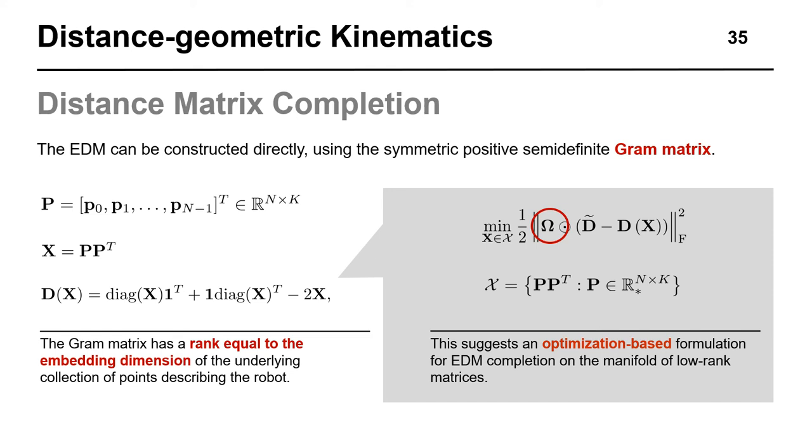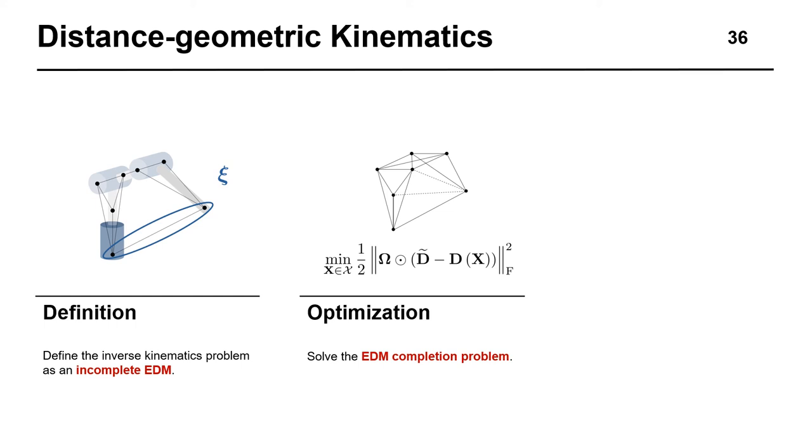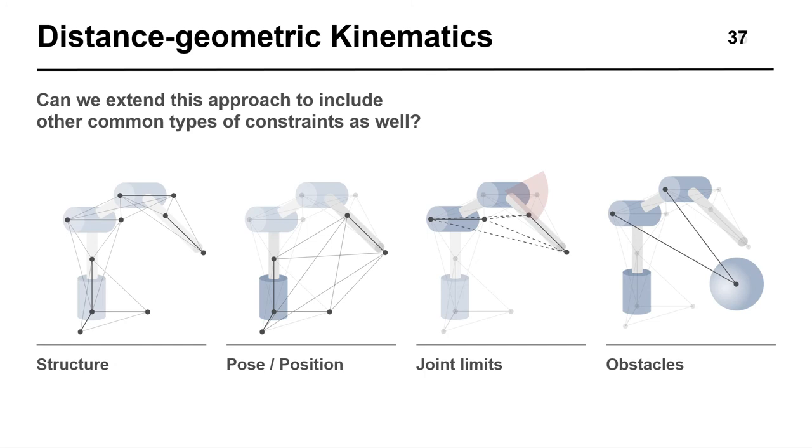Naturally, this formulation can be extended to include distance ranges by adding constraints or elements to the cost function. This gives us a novel way of solving inverse kinematics numerically without using joint angles as decision variables. The problem is first defined using distances representing the goal and robot structure along with distance ranges representing other constraints. Next, an optimization method is used to find a point set that corresponds to a feasible solution. And finally, the configuration vector is reconstructed from that point set.